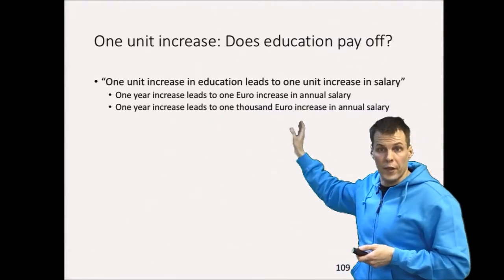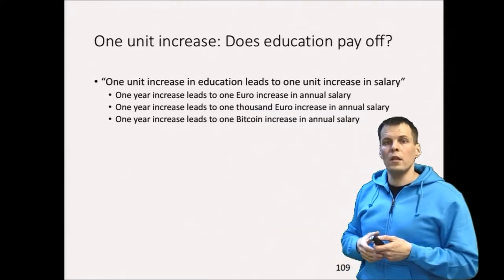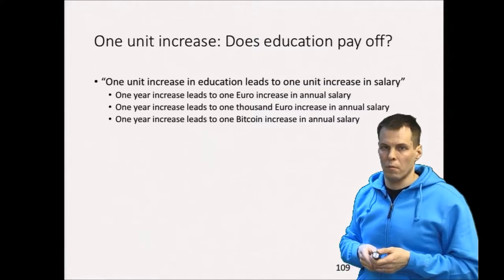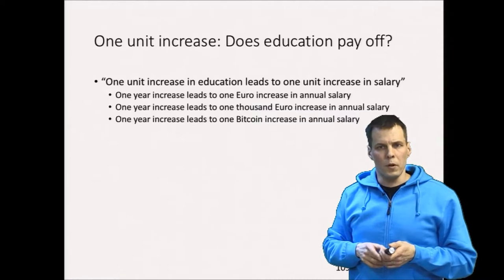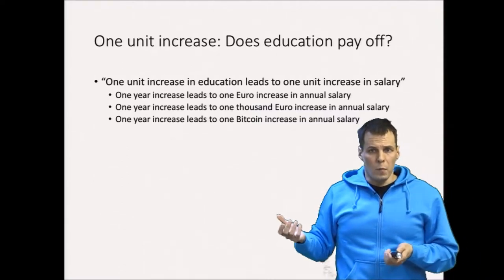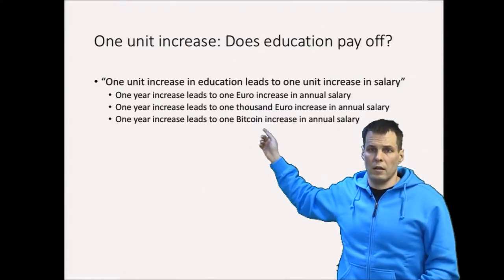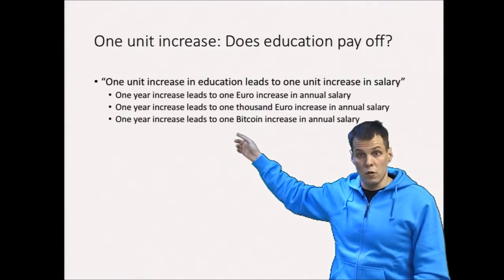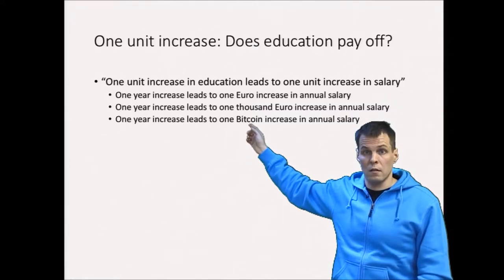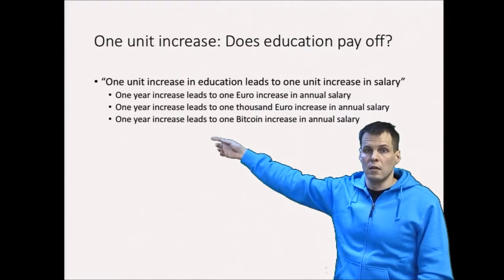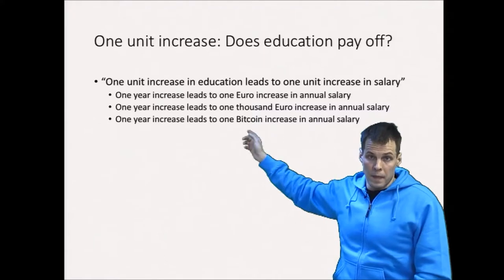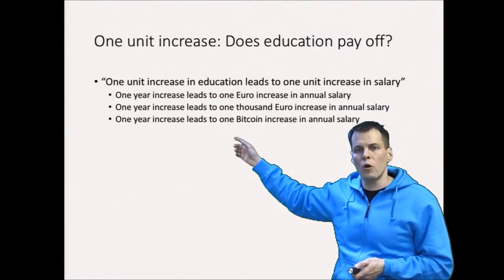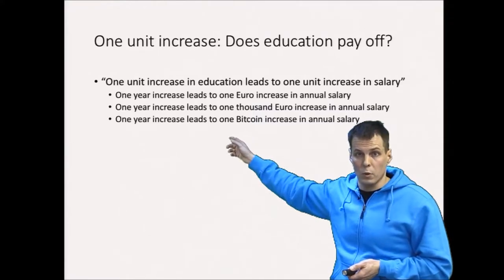What if one year of education leads to one bitcoin increase in annual salary? People don't have an intuitive understanding of bitcoin's value, so you'd convert it to euros. If one bitcoin is worth 3,000 euros, we can express the coefficient as a 3,000 euro increase — which is probably a big deal for some people. Sometimes we can convert units to something understandable even if the original unit was not easily interpretable.